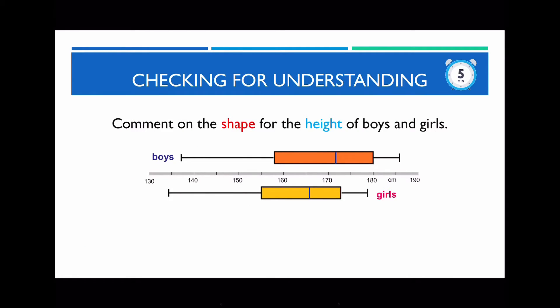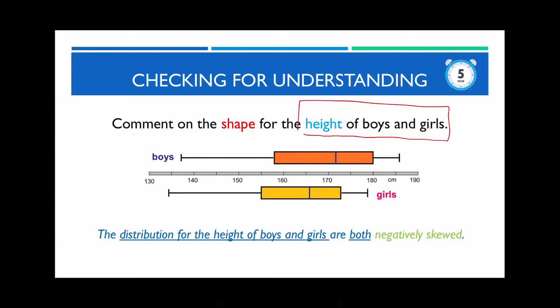Please write in full sentences where you need to comment on the shape for the height of boys and girls. Remember, when answering these questions, use full sentences and try to include the context of the question. The context here is related to the height of boys and girls. Please pause this video and answer the questions. The answer is: the distribution for the height of boys and girls are both negatively skewed. The distribution — meaning the box part — for the height of boys and girls, are both negatively skewed, because the length of the lower tail is longer than the length of the upper tail for both cases.